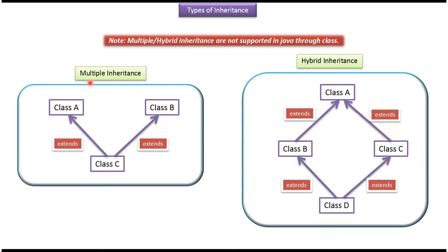The fourth one is Multiple Inheritance. In Multiple Inheritance, one class can extend two or more classes. Here you can see the example: Class C extends Class A, and Class C also extends Class B. But this kind of Multiple Inheritance is not supported by Java.